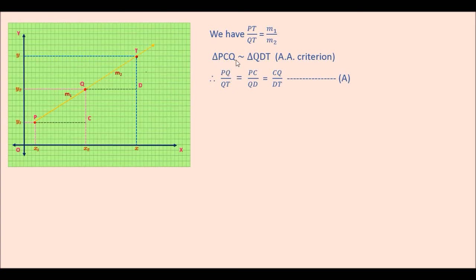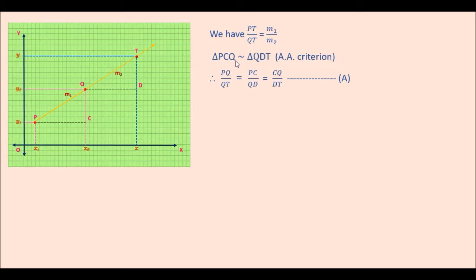For the corresponding sides, the numerators come from the first triangle and the denominators from the second triangle. Taking the first and third letters: PQ by QT. Taking first and second letters: PC by QD. Taking second and third letters: CQ by DT. So we have PQ/QT = PC/QD = CQ/DT. This becomes our relation A.